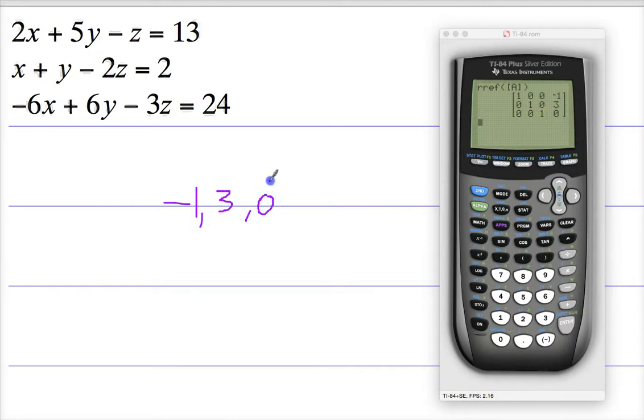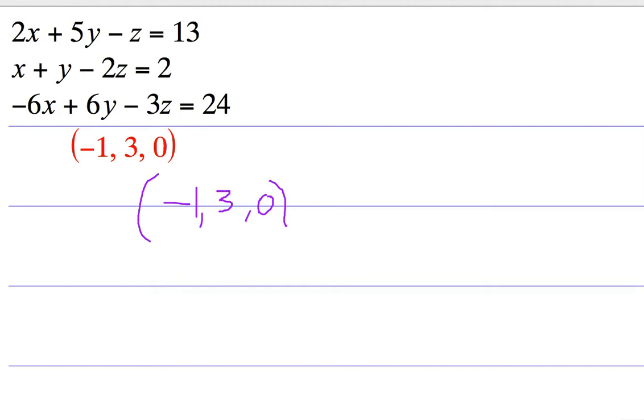So what all of this would mean is that my solution to my system of equations with three variables is negative 1, 3, and 0. I'm going to check my answer to make sure that I'm right. And that's pretty much it. It's not really super complicated.